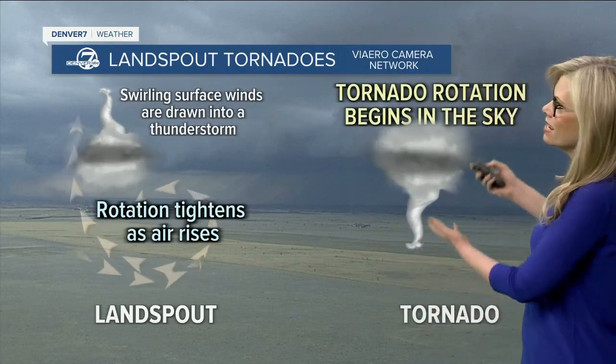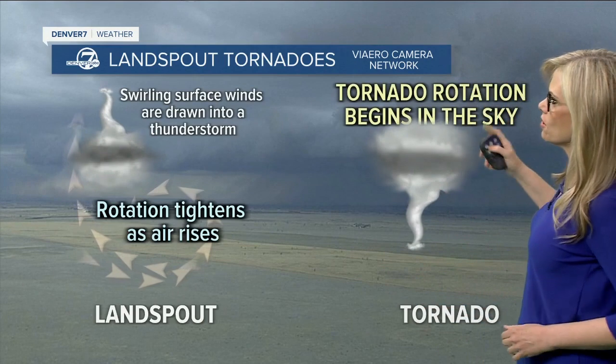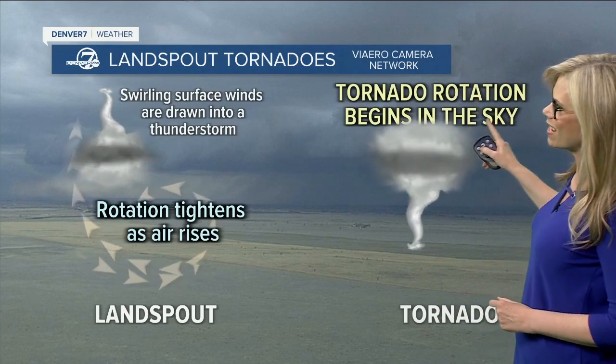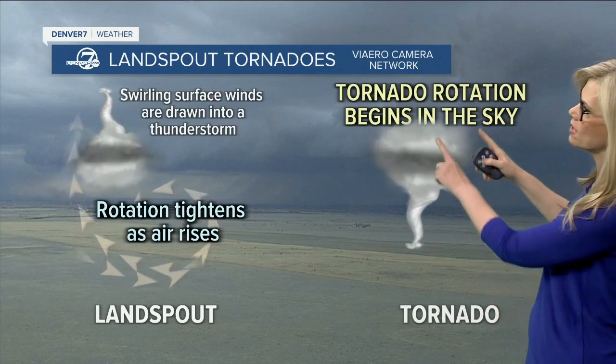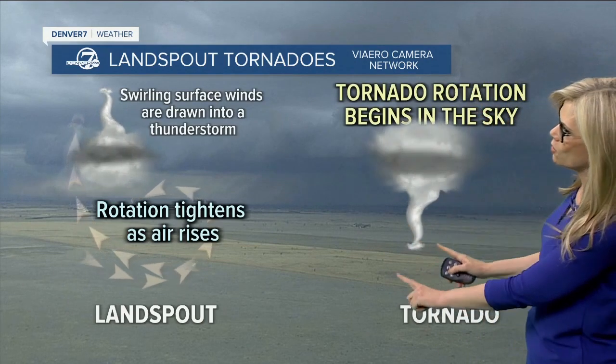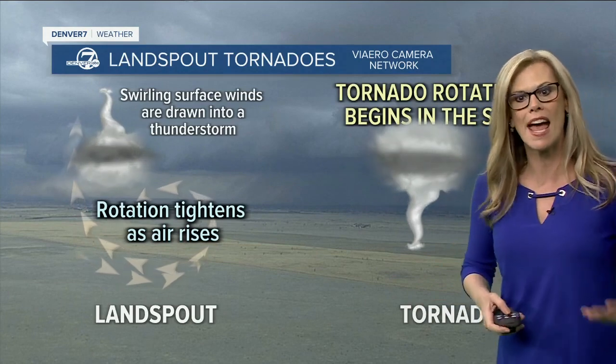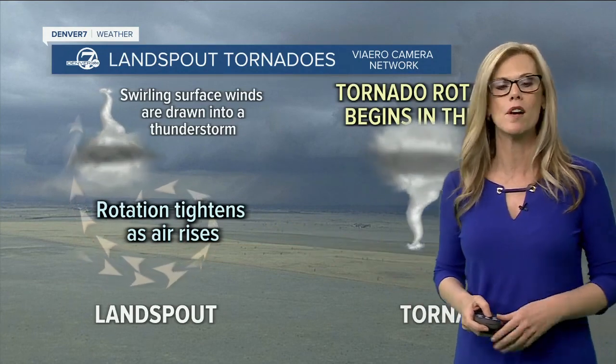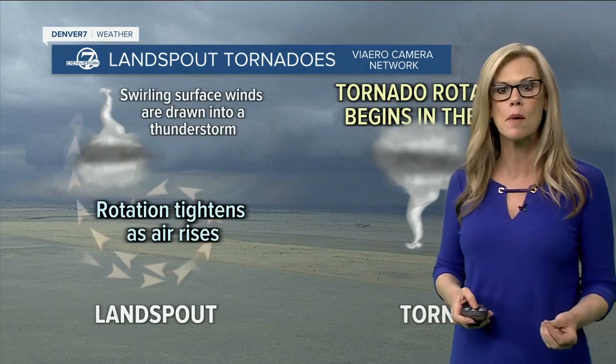Now, a regular tornado that we normally see this time of year — the rotation begins in the sky in a supercell, and when that tornado touches down, that's when we have an actual tornado on the ground. So what we saw today was a landspout tornado. It does not differentiate in damage — the winds can still be around 100 miles per hour.